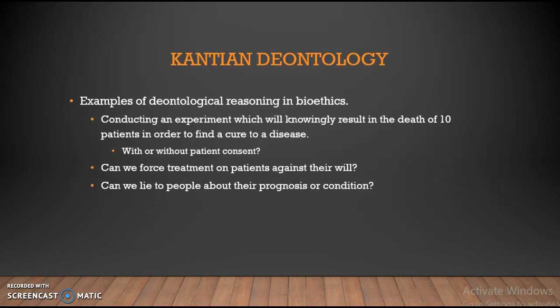What happens when we conduct an experiment that will knowingly result in the death of 10 patients in order to find a cure to a disease? This would violate formulation two of the categorical imperative because we would be treating those 10 people as a means to an end. Some might say we're also treating them as an end if we get their consent first, but even that would be ruled out because it would be a form of suicide on the patient's part — if they knew the experiment would result in their death, they're essentially committing suicide and not properly respecting their humanity. That's the end of utilitarianism and deontology. Next we'll look at two more moral theories: virtue ethics and Rawlsian contractualism.